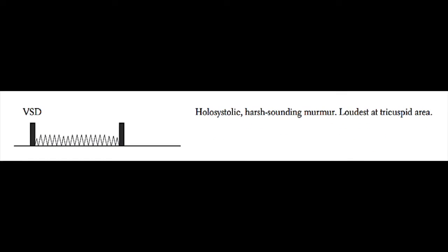The next murmur is that of a ventricular septal defect. A VSD murmur is a holosystolic murmur which is harsh sounding, but is not crescendo-decrescendo. Generally a VSD murmur is loudest at the tricuspid listening post, that is the lower left sternal border.